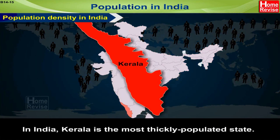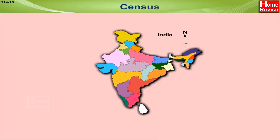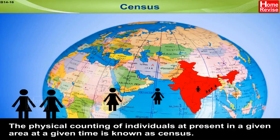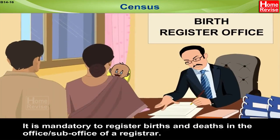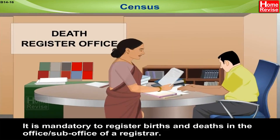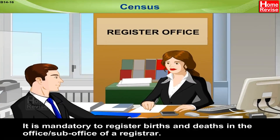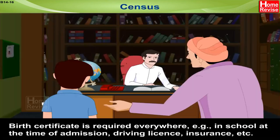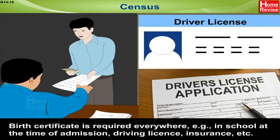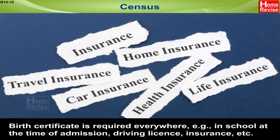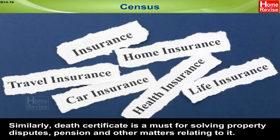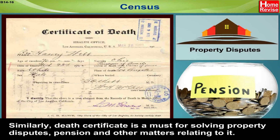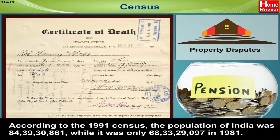In India, Kerala is the most thickly populated state. Census — the physical counting of individuals present in a given area at a given time — is known as census. It is mandatory to register births and deaths. A birth certificate is required everywhere, for example in school at the time of admission, for a driving license, insurance, etc.